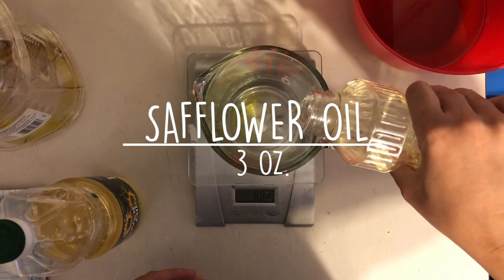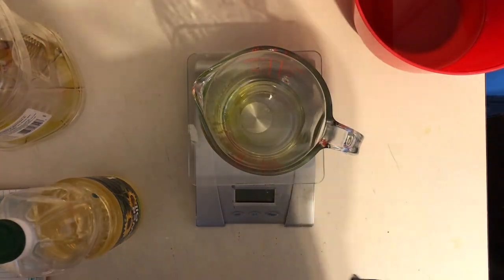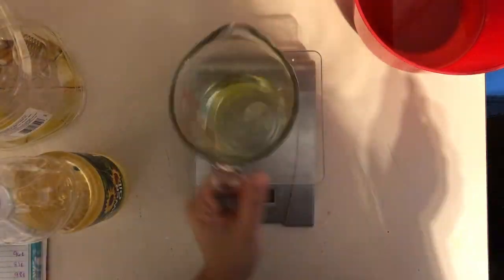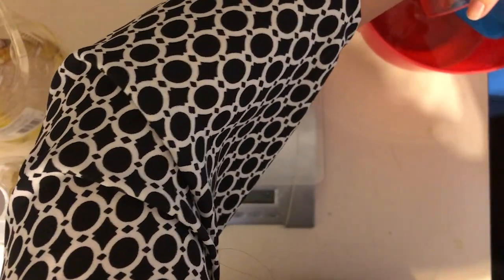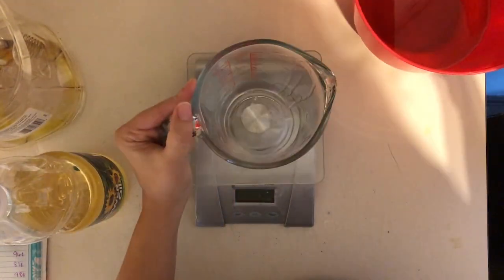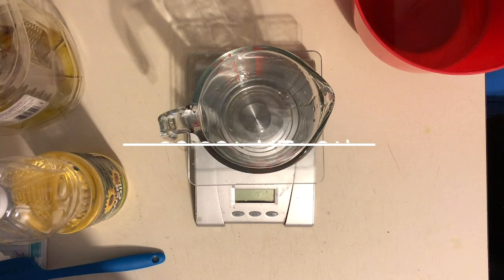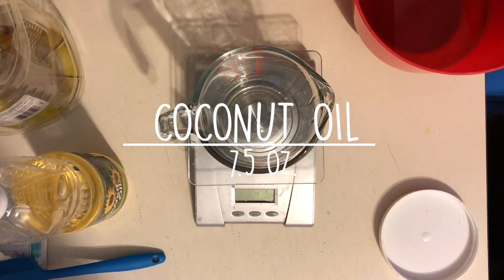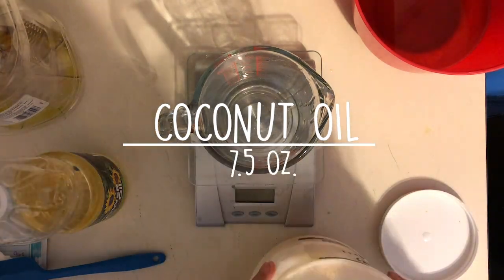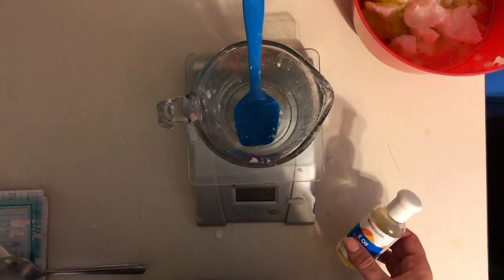Next will be the safflower oil at 3 ounces. I'm mixing everything into a large container and I'm going to add coconut oil. You do want to melt that down. You can either melt it in the microwave in 30-second blasts or cook it on the stove on low temperature, which is what I usually do.